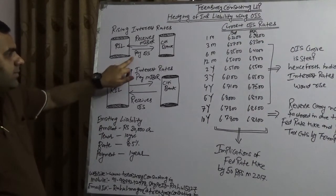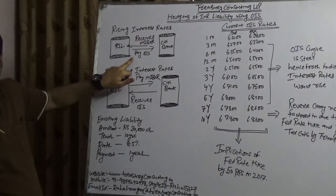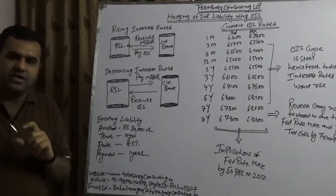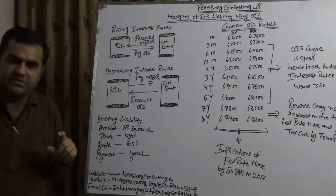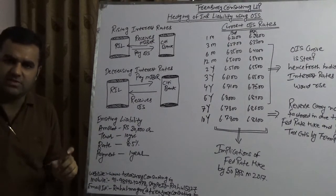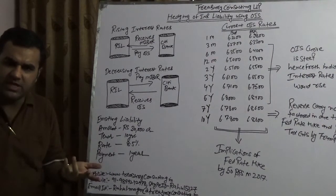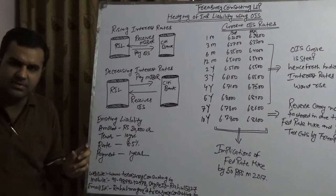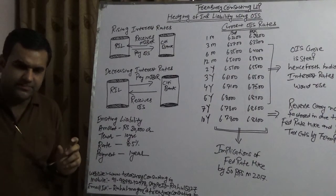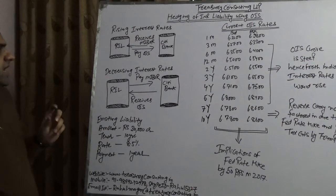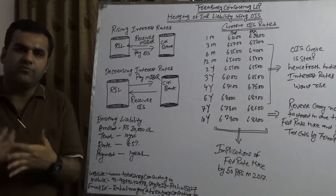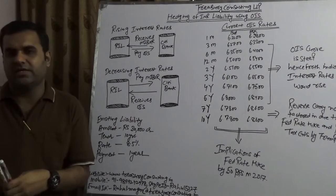One leg of OIS is the MIBOR — the Mumbai Interbank Offer Rate — which is an interbank offer rate published at 10 a.m. IST. There are respective contributors decided by Thomson Reuters as well as the Reserve Bank of India. They contribute, and based on their contributions, a rate is published at 10 a.m. IST. That rate can either be received or paid, depending on your view of whether interest rates will rise or fall.